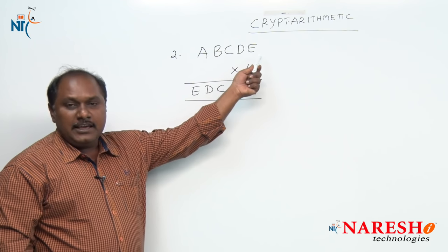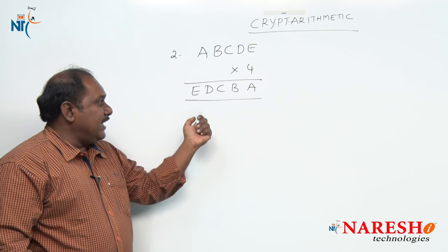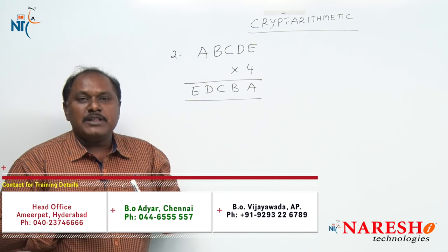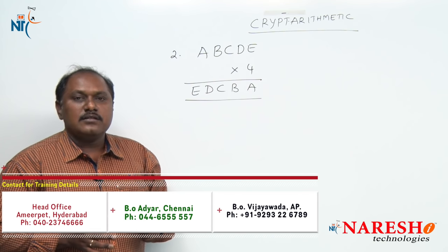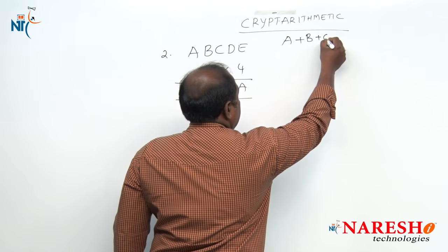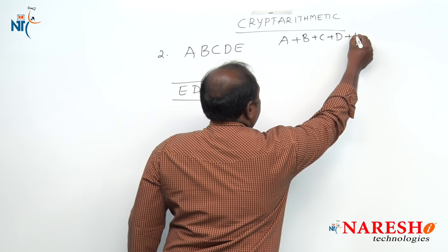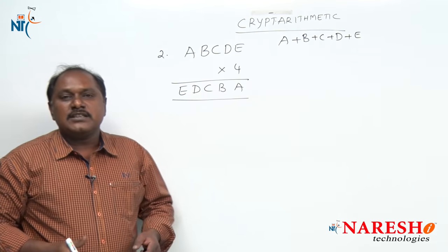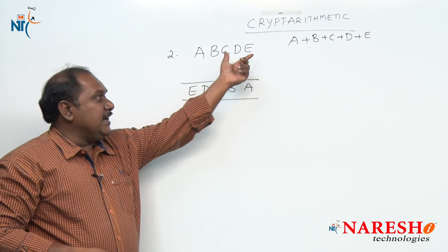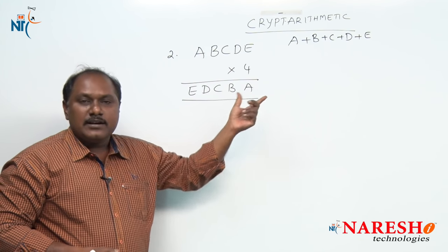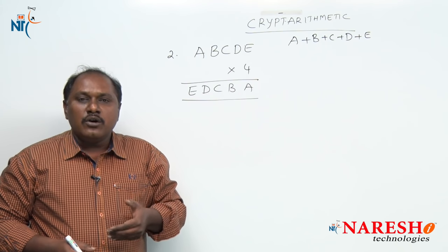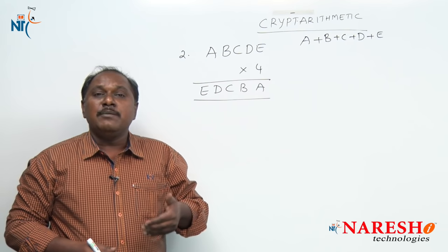The next question is: abcde multiplied by 4 equals edcba. If each letter represents a different digit, find the value of a plus b plus c plus d plus e. So this is a multiplication problem. To answer this, we must know certain basic points about multiples of 4.